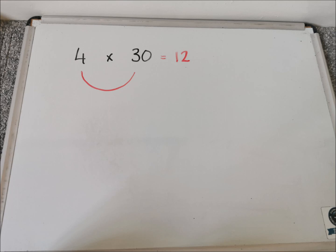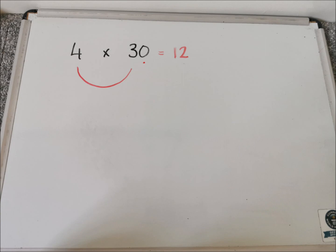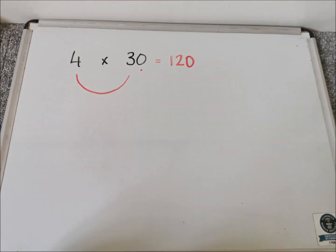The next step is I draw a dot or a little eye underneath the zero in the question. And because there's only one little dot, one little zero in that question, I add that zero on to the end of my answer. So 4 times 30 is 120.